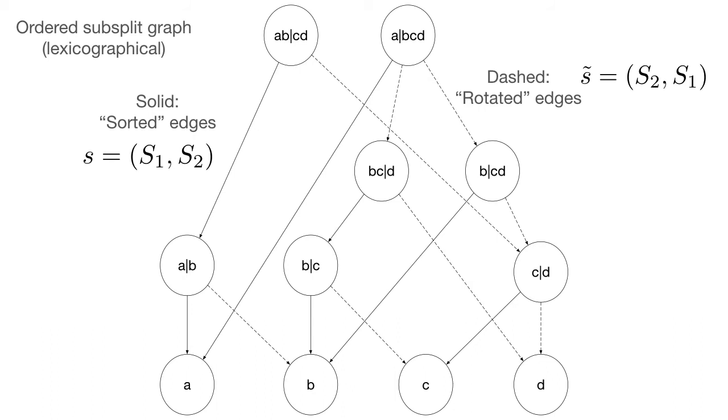So here is the ordered subsplit graph. So it's a subsplit graph, but we added a term ordered to indicate that the subsplits are always ordered using lexicographical ordering. And so here we have subsplit S, which is denoted as tuple of clade S1 and S2. So here S1 comes before S2 by lexicographical order. And we have this notion of rotating a subsplit and rotating a subsplit just means we're going to flip the clades. So if you rotate S, then we're going to get a tuple where S2 comes before S1.